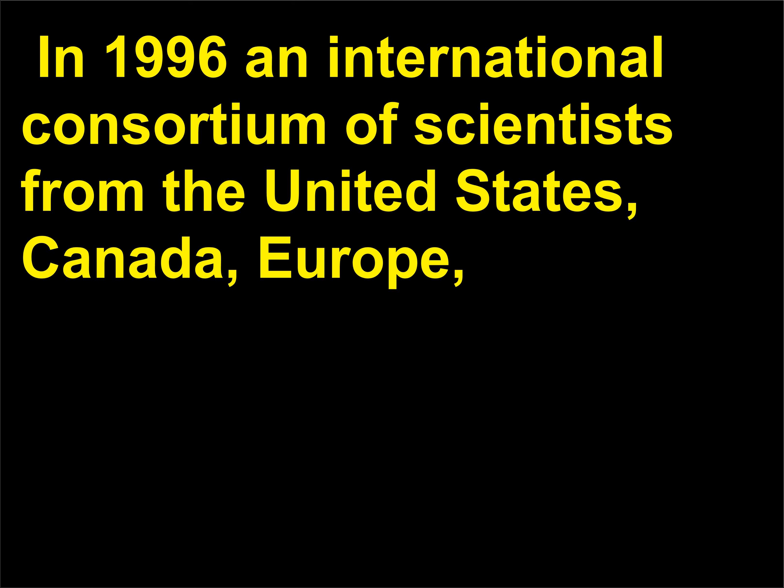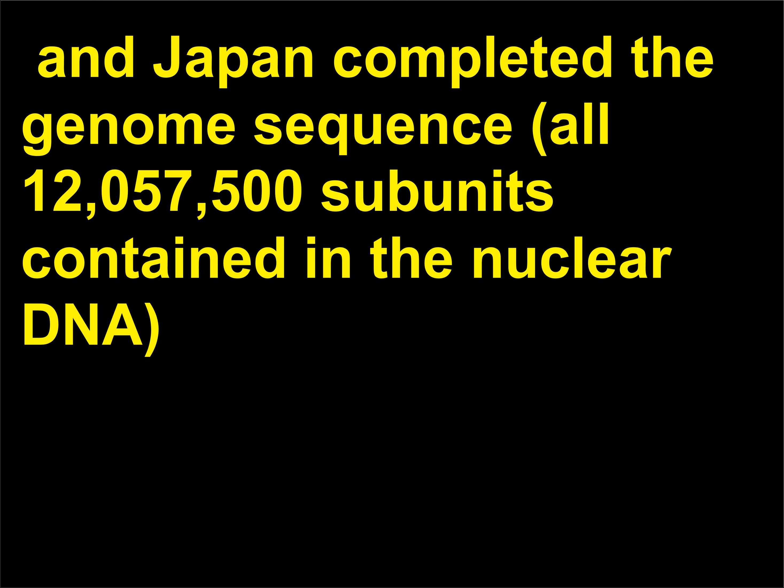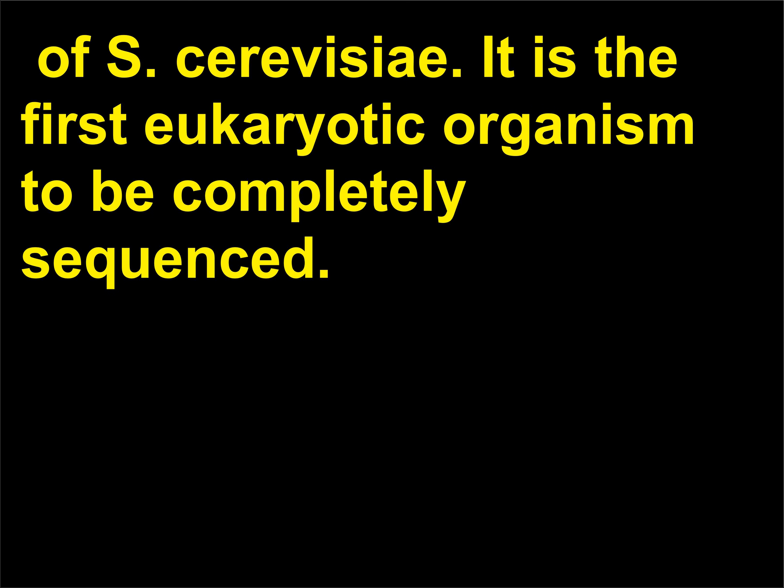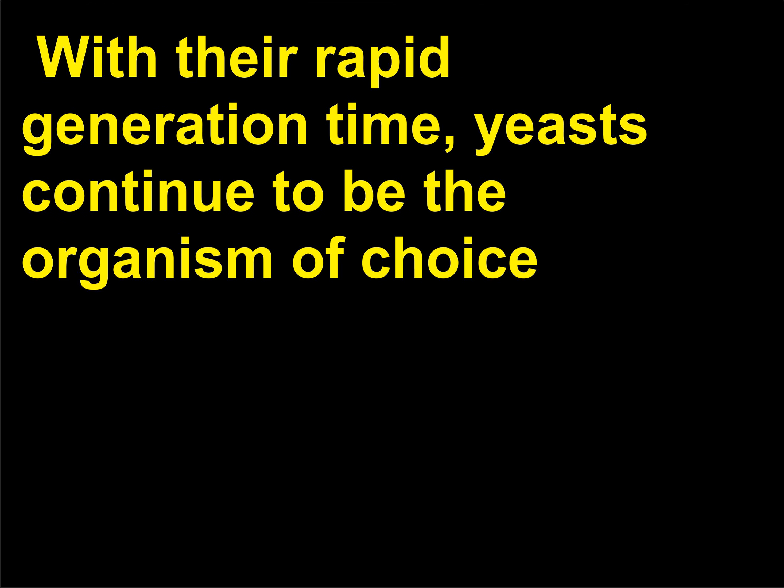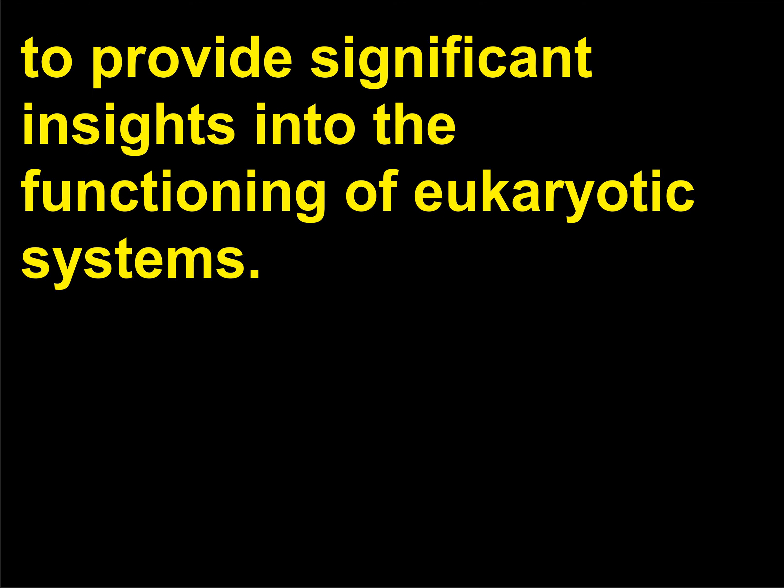In 1996, an international consortium of scientists from the United States, Canada, Europe, and Japan completed the genome sequence — all 12,057,500 subunits contained in the nuclear DNA of S. cerevisiae — making it the first eukaryotic organism to be completely sequenced. With their rapid generation time, yeasts continue to be the organism of choice to provide significant insights into the functioning of eukaryotic systems.